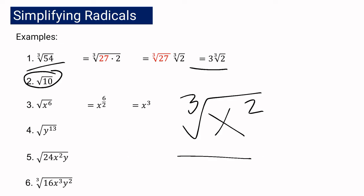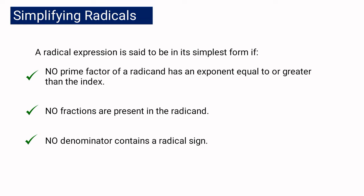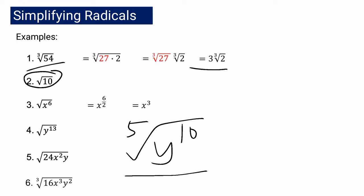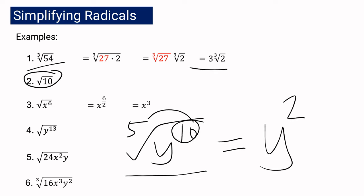But what if we have the cube root of x squared? Can we still simplify it? This one is already in the simplest form because our exponent 2 is already less than our index 3. The condition states there should be no exponent equal to or greater than the index — so if the exponent is less than the index, it is already in the simplest form. That is why, if we have the 5th root of y to the 10th, our exponent 10 is still greater than 5, meaning it can be simplified. Dividing 10 by 5, its simplest form is y squared.